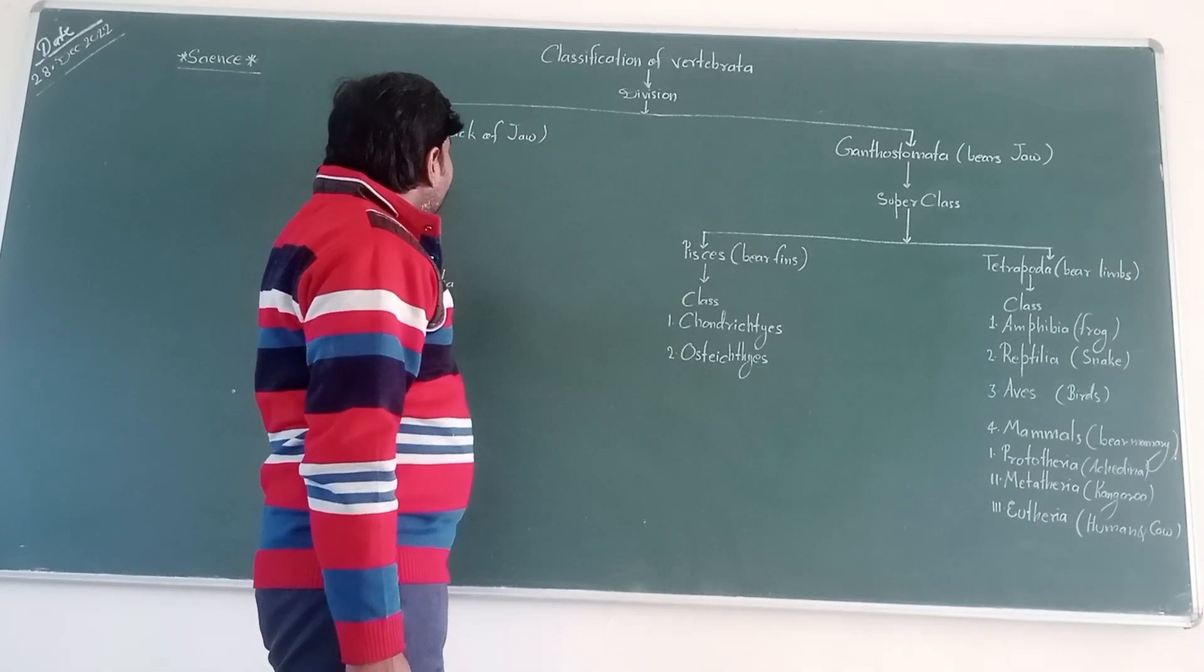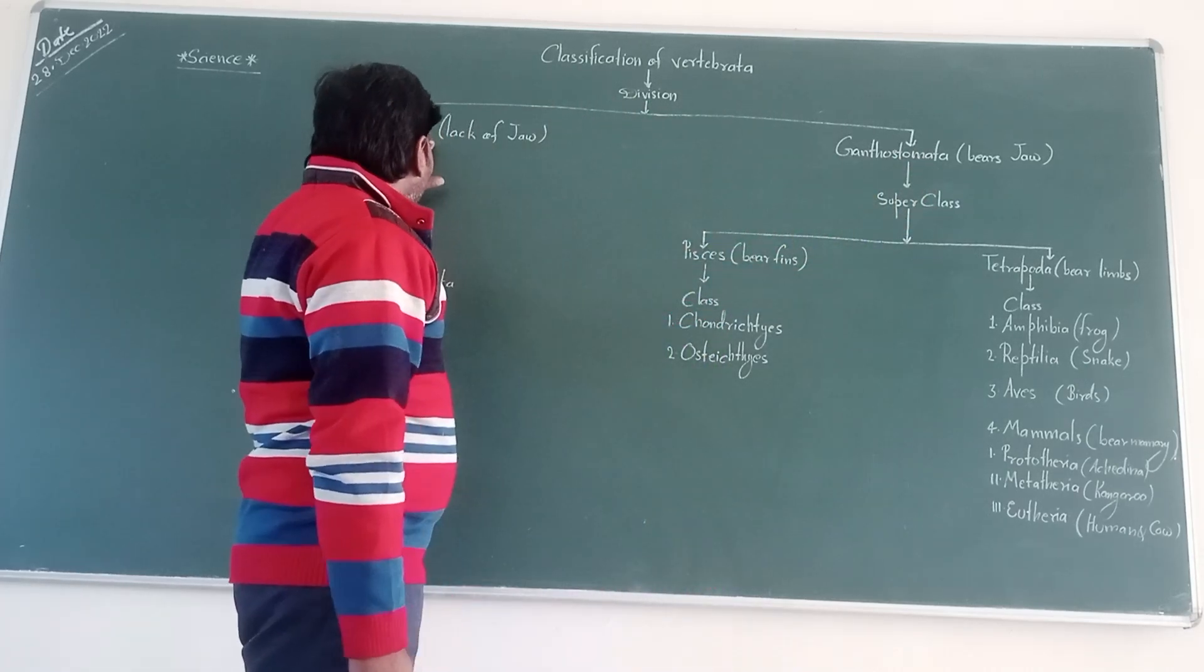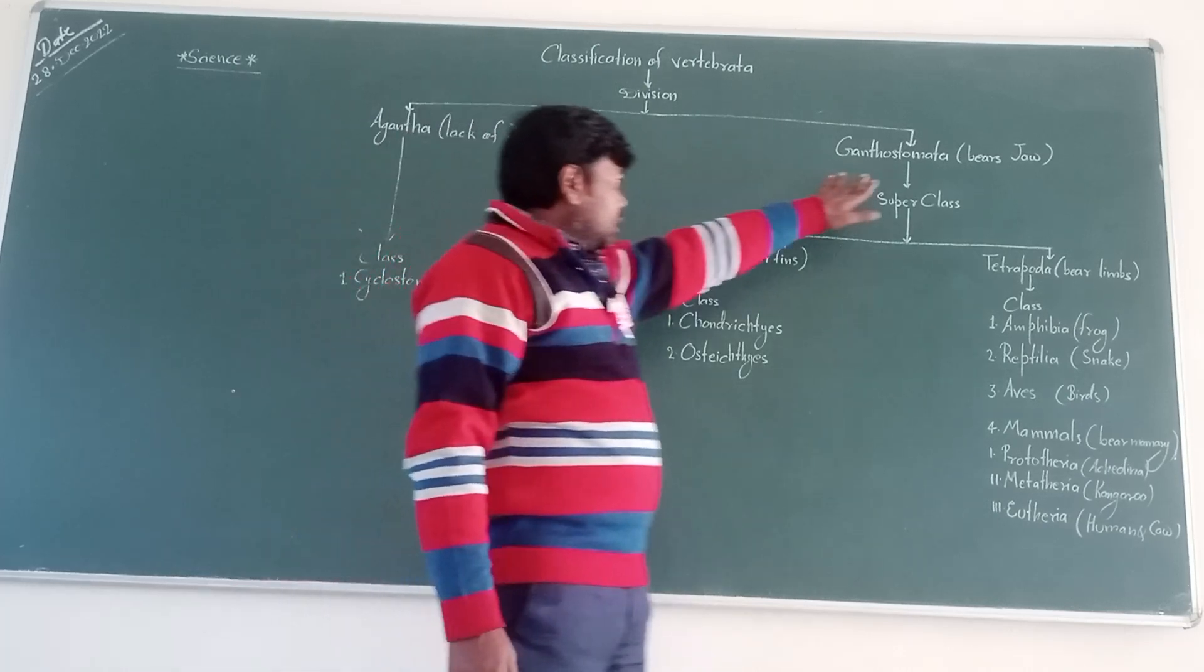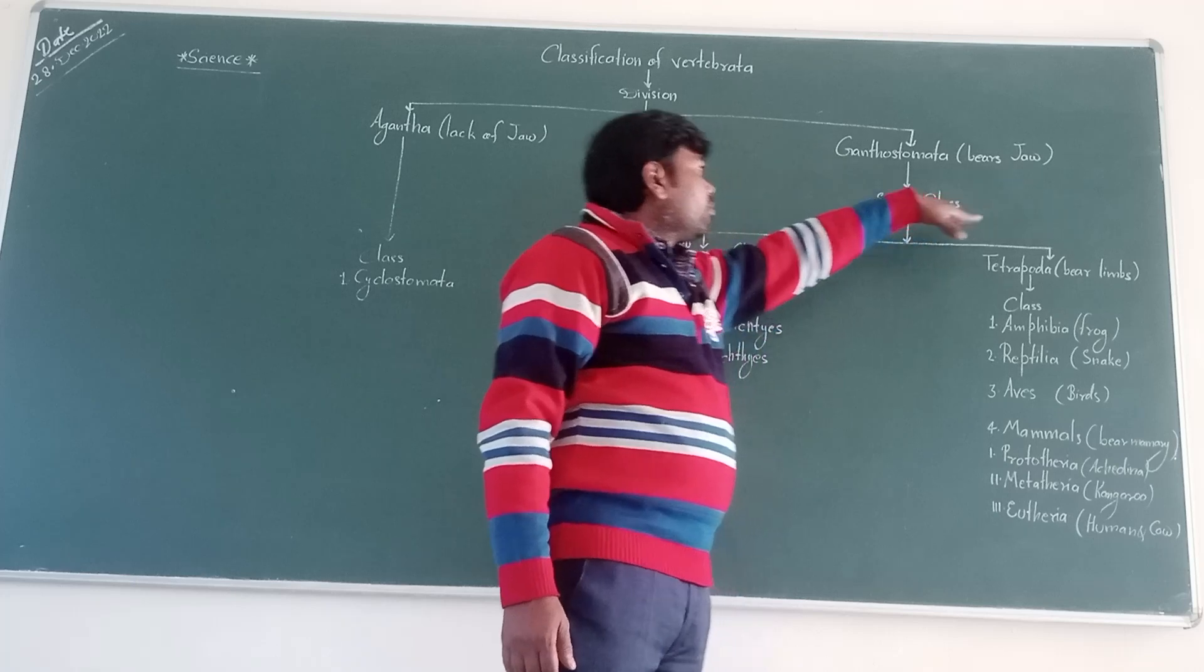First of all, Agnatha and Gnathostomata. Agnatha are also known as jawless vertebrates, and Gnathostomata are known as jawed vertebrates.